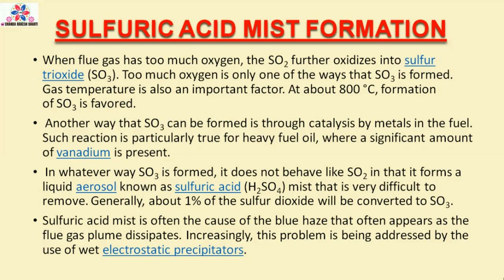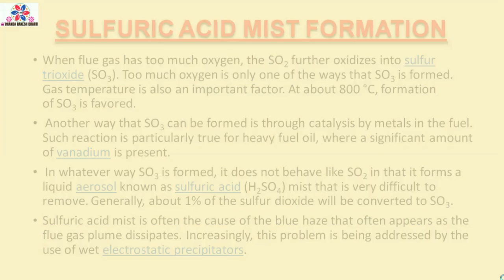Generally, about 1% of the sulfur dioxide will be converted to SO3. Sulfuric acid mist is often the cause of the blue haze that often appears as the flue gas plume dissipates. Increasingly, this problem is being addressed by the use of wet electrostatic precipitators.